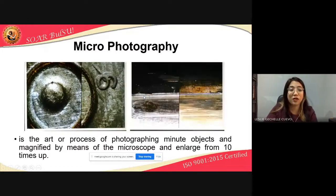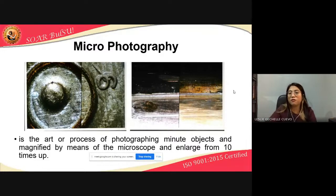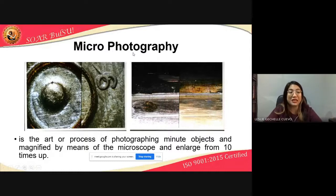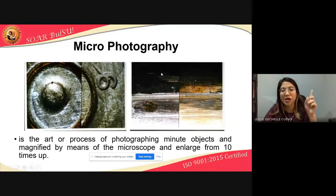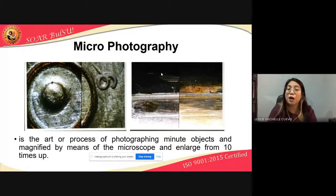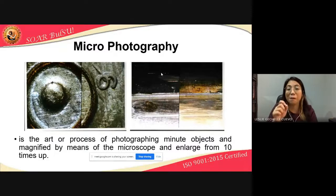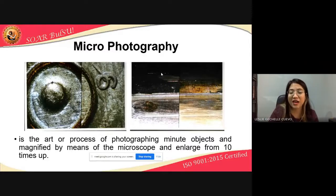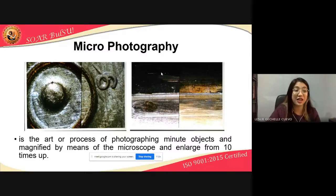Micro photography is the art or process of photographing minute objects magnified by means of a microscope, enlarged from ten times up. Notice the difference: macro photography goes up to nine times magnification, while micro photography starts at ten times and beyond — a stronger magnifying power — and uses an actual microscope.